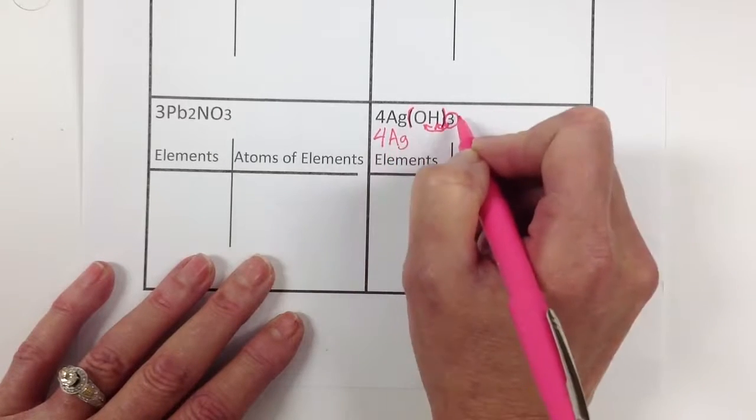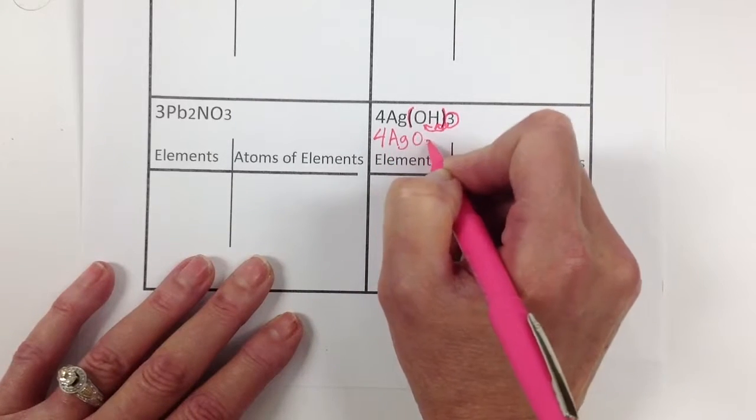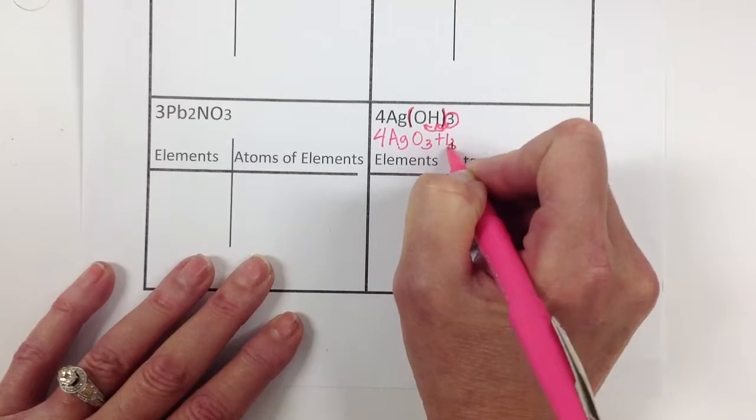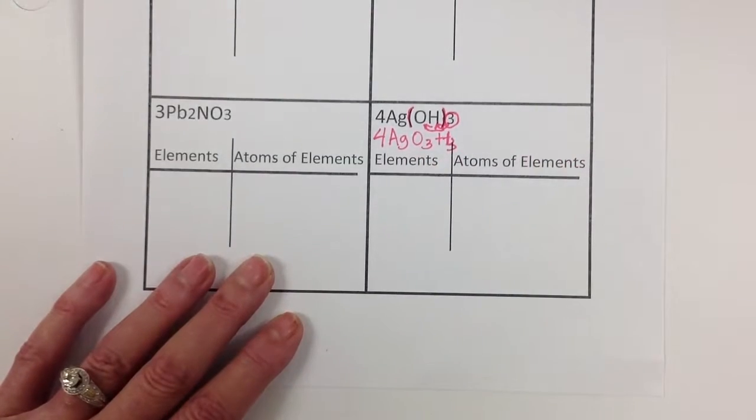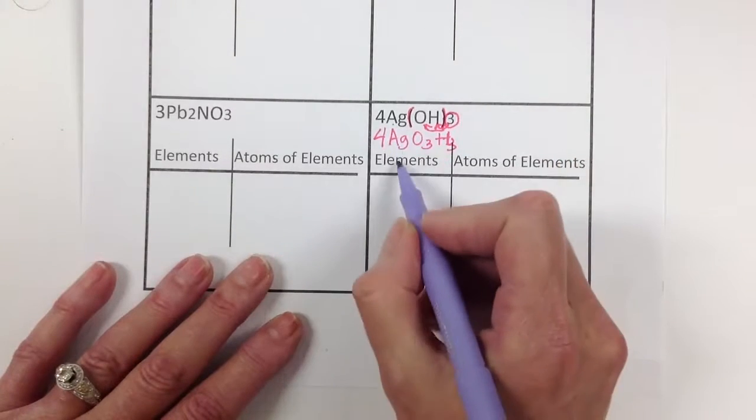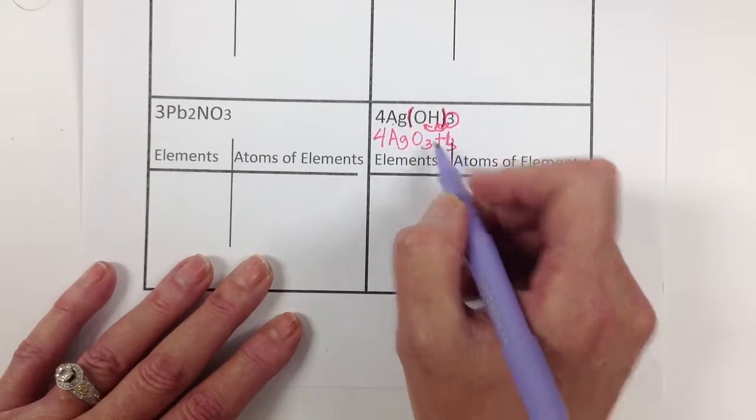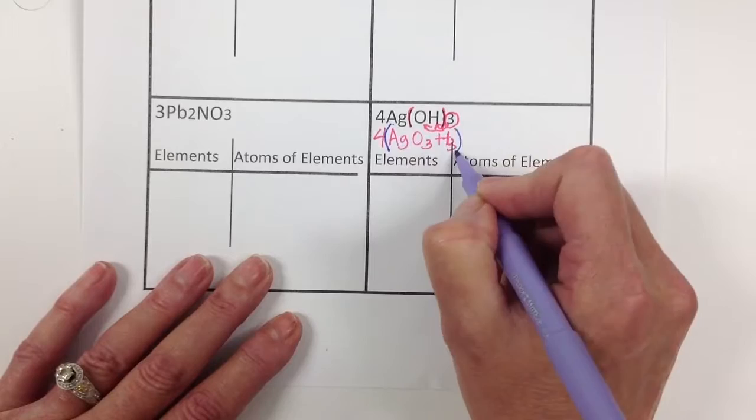So let's get rid of it. And then we have 4Ag. If we distribute our three, that means we have O3H3. So now we can just move on. We now know we have 4Ag, O3H3, right? Four times this whole thing.